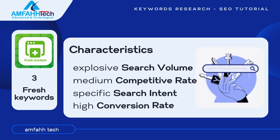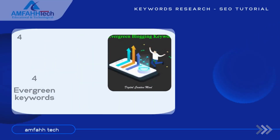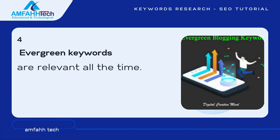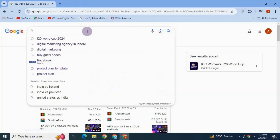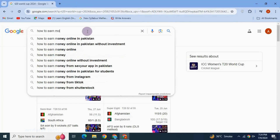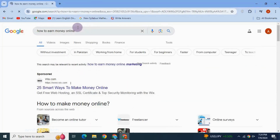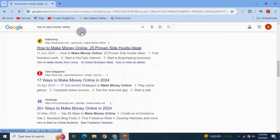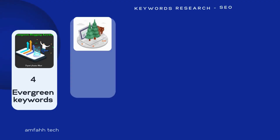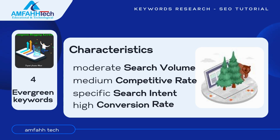Evergreen keywords are those keywords that are relevant all the time. The search volume might fluctuate now and then, but there won't be extreme changes. For example, 'how to earn money online' is an evergreen keyword because this phrase is always being searched on the internet and its search volume will always remain moderate. The characteristics of evergreen keywords are: moderate search volume, medium competitive rate, specific search intent, and high conversion rate.